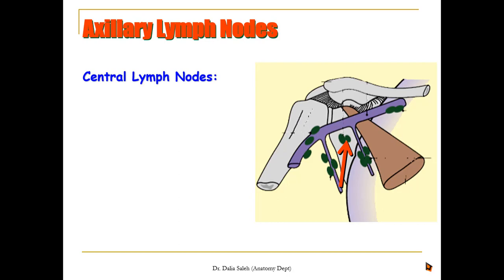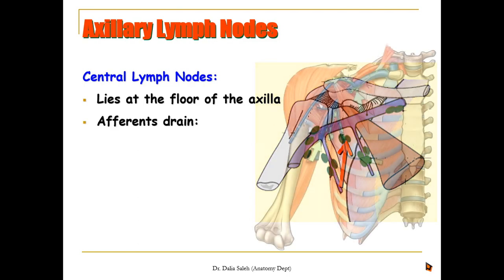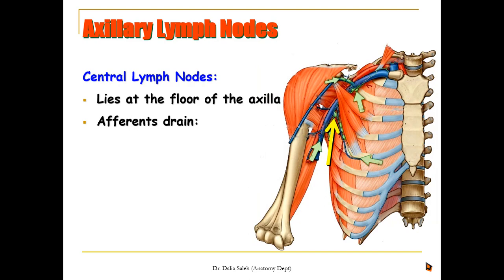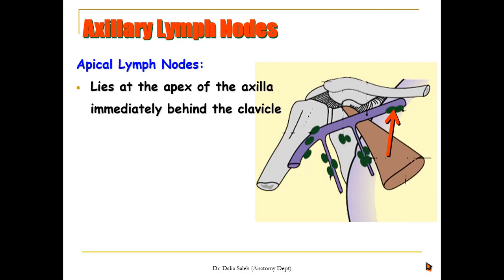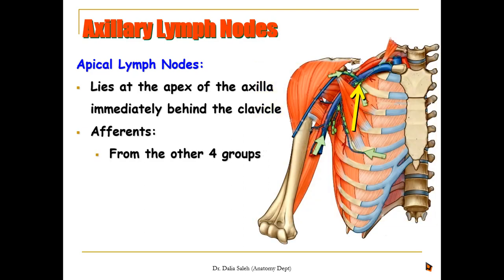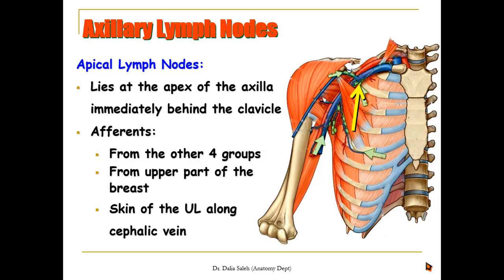The central group of lymph nodes lies in the floor of the axilla between the previous three groups. They are the largest and most palpable, and their afferents drain from the anterior, posterior, and lateral groups of lymph nodes. The apical group lies at the apex of the axilla immediately behind the clavicle and receives afferents from the other four groups — anterior, posterior, lateral, and central — as well as from the upper part of the breast and the skin of the upper limb along the cephalic vein.